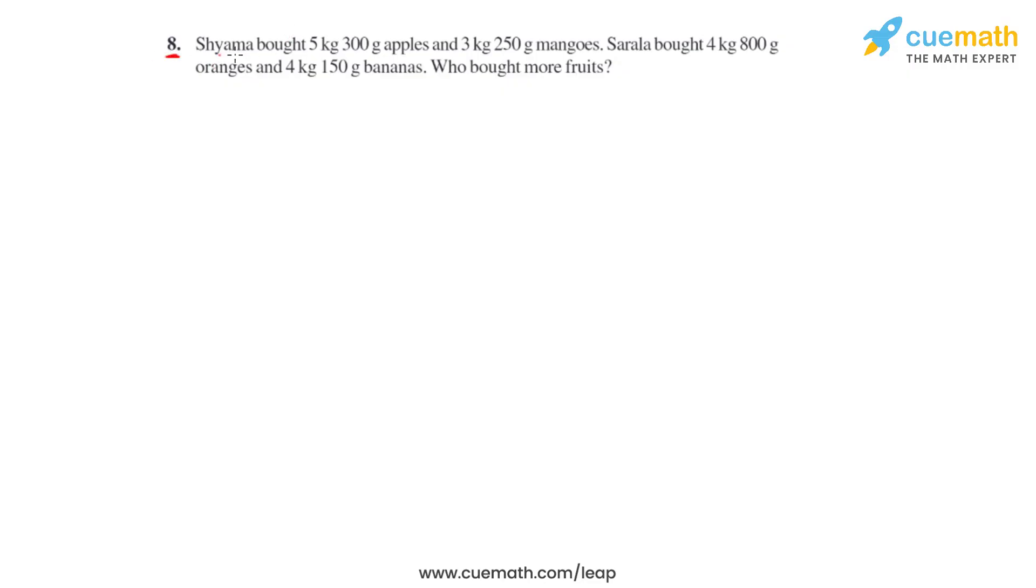Question number 8: Shama bought 5kg 300g apples and 3kg 250g mangoes, whereas Sarla bought 4kg 800g oranges and 4kg 150g bananas. Who brought more fruits?